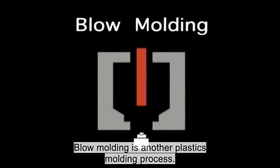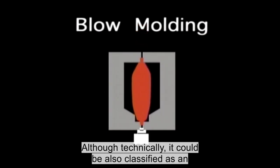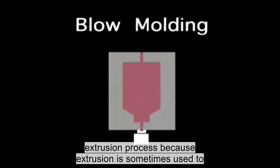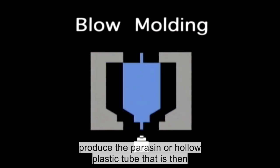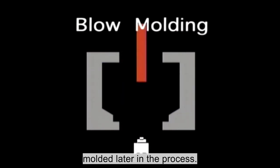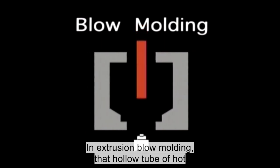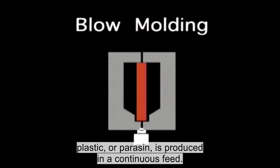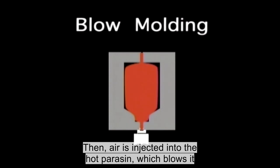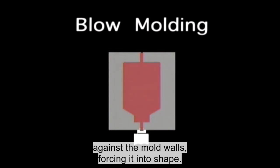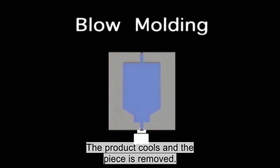Blow molding is another plastics molding process, although technically it could be also classified as an extrusion process because extrusion is sometimes used to produce the parison or hollow plastic tube that is then molded later in the process. In extrusion blow molding, that hollow tube of hot plastic or parison is produced in a continuous feed. The mold closes on the tube, sealing off the ends. Then, air is injected into the hot parison which blows it against the mold walls, forcing it into shape. The product cools and the piece is removed.